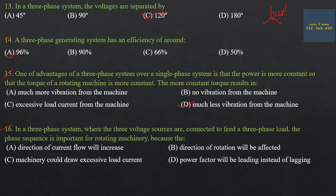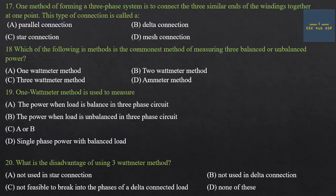Sixteenth question: In a three-phase system where three voltage sources feed a three-phase load, the phase sequence is important for rotating machinery because it affects the direction of rotation. Seventeenth question: One method of forming a three-phase system is to connect the three similar ends of the winding together at one point. This type of connection is called star connection.